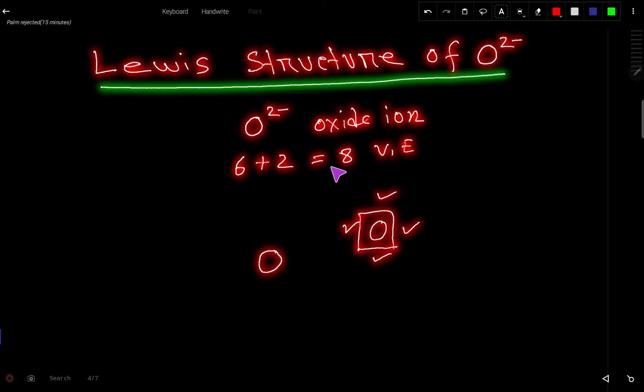Now you have to express these valence electrons as dots. Every side will take 1 valence electron at first, then if you have more valence electrons, you can pair them.